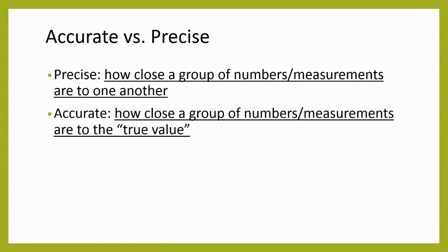So we can also describe measurements using the terms accurate and precise. In everyday conversation, these terms have pretty similar meanings, but they do take on different meanings once we get into the laboratory. Precise is how close a group of numbers or measurements are to one another, not to the true value, but how closely are they grouped to one another. Accurate describes how close a group of numbers or measurements are to the true correct value.